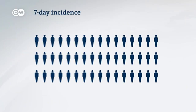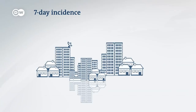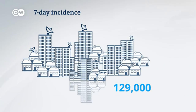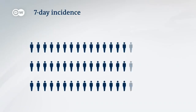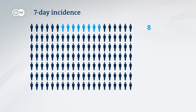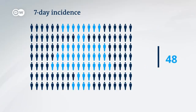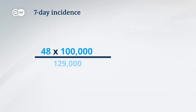The seven-day incidence indicates how many people tested positive within one week, measured per 100,000 inhabitants. For example, let's assume a city with 129,000 inhabitants has a certain number of positive tests in one week. We add up all the positive test results, and then the seven-day incidence is calculated: 48 times 100,000 divided by 129,000 inhabitants, giving an incidence of 37.2.